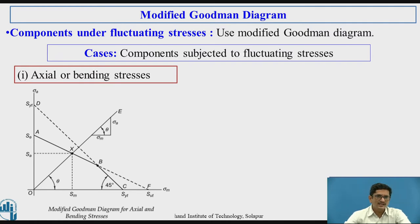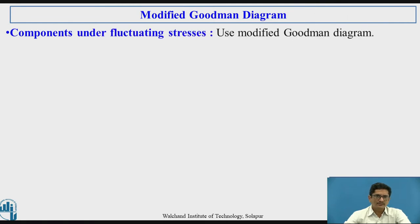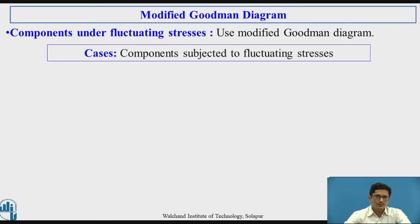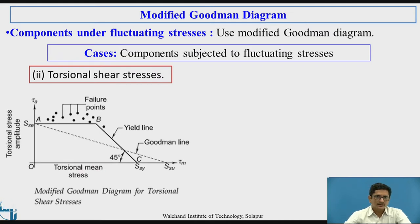There is a new line seen as OXE. We will see what that line is and what is the significance of it. The components subjected to fluctuating stress — the case two is torsional shear stress, because the component may be under torsional shear stress just as it can be under axial or bending. The method to draw this modified Goodman diagram differs a little bit.